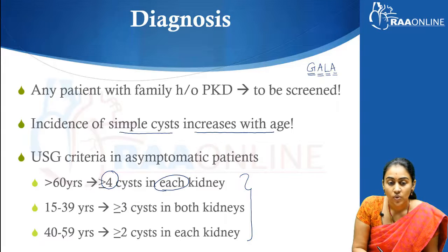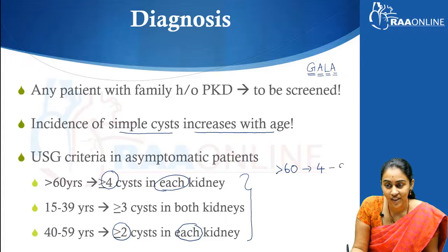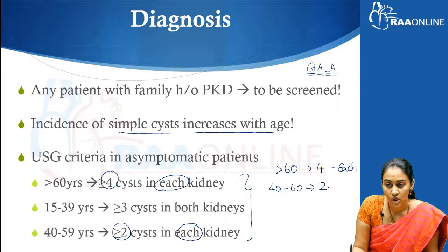In a patient between 40 to 60 years, 2 or more cysts in each kidney is required. So this is easy to remember — anybody more than 60 years needs 4 or more cysts in each kidney, while in patients between 40 to 60 years you need half as much: 2 or more cysts, again in each kidney.